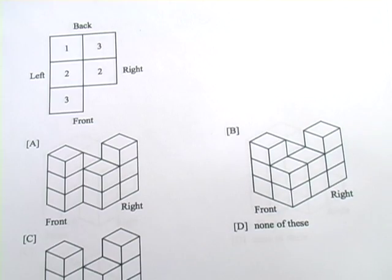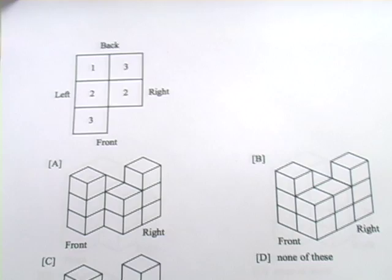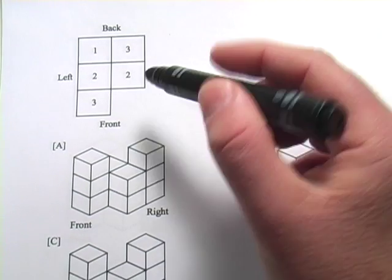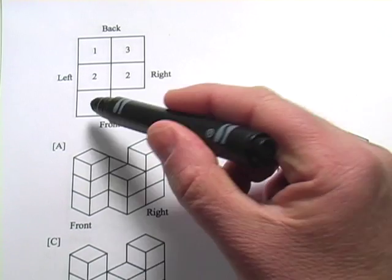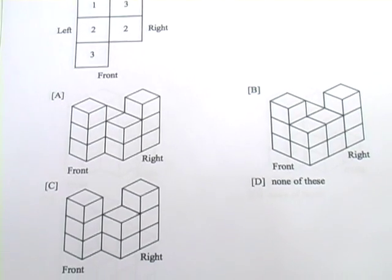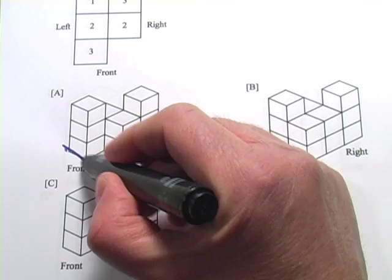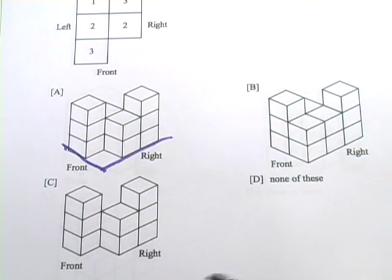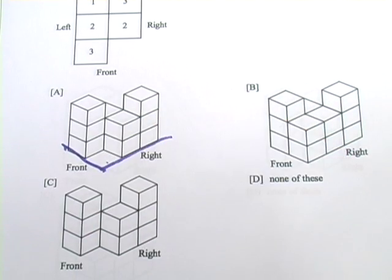Let's try one more of these. So here's our orthographic drawing. In the front, we've got three and none to start off with. Let's look at our answer choices and see if we can do that. So here's the front. There's the right. Three and none. That looks good.